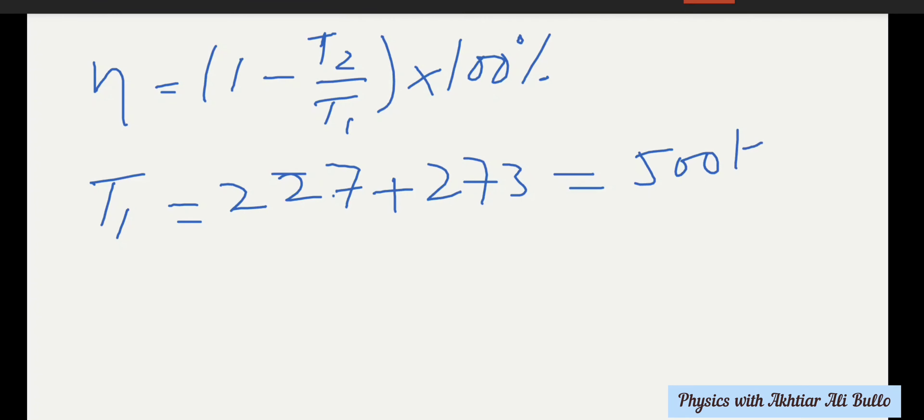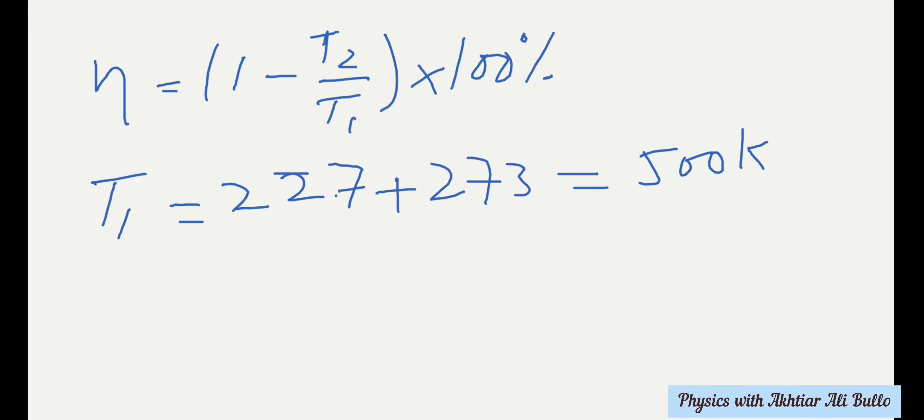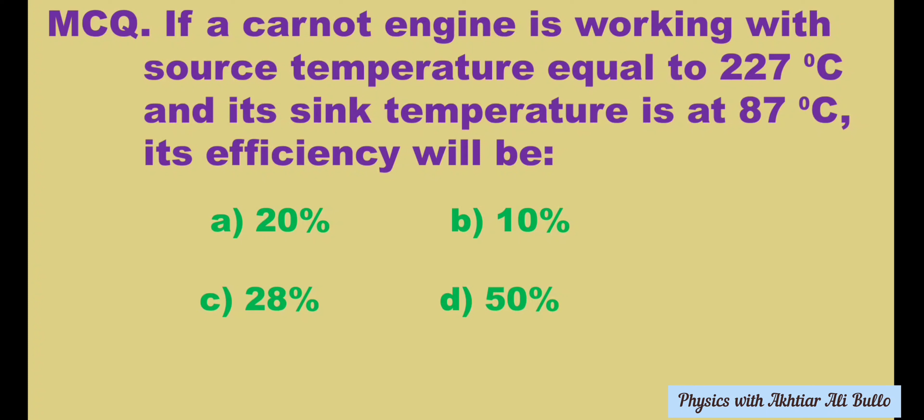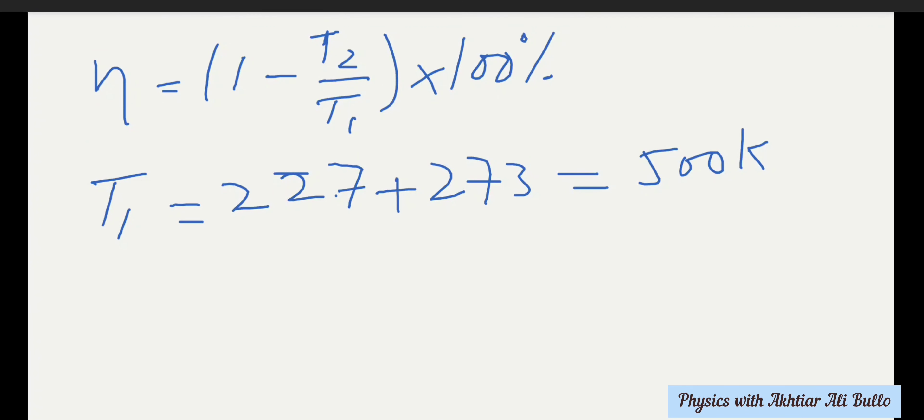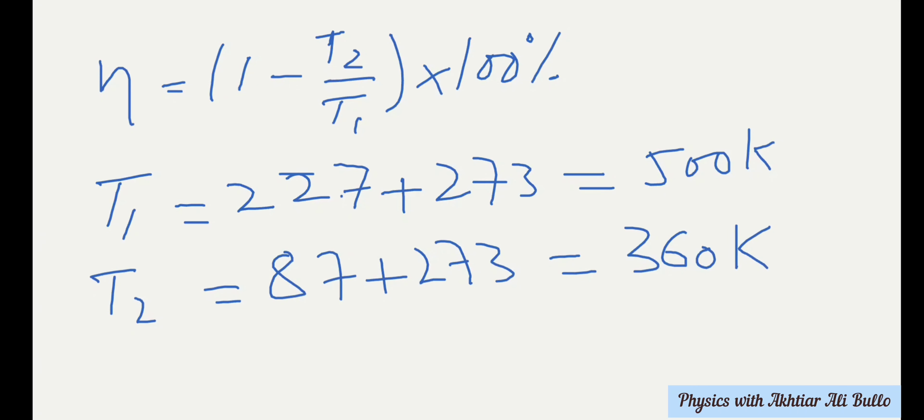The temperature of the sink, T2, is 87 degrees Celsius. To convert it into Kelvin, we add 273, so T2 = 87 + 273 = 360 Kelvin. Now by putting the values...